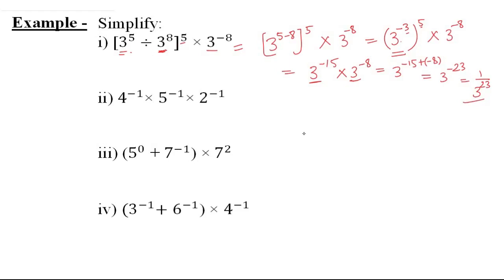Second: 4 raise to the power negative 1 multiplied by 5 raise to the power negative 1 multiplied by 2 raise to the power negative 1. The exponents are the same so we can apply the rule, or directly convert to positive exponents. We write: 1 upon 4 multiplied by 1 upon 5 multiplied by 1 upon 2, which gives 1 upon 40. If you combine the bases first you get 40 raise to the power negative 1, which is 1 upon 40.